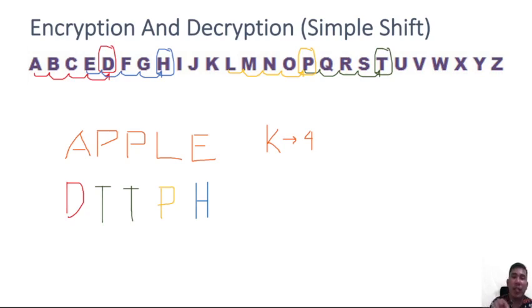All you need to do is shift back using the same key, which is four. So we always have a constant value of key for encryption and decryption process in order for us to arrive at the correct ciphertext and plaintext.